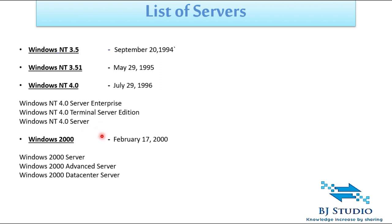The fourth edition is Windows 2000, released in February 2000. When it comes to Windows 2000, they listed three flavors or editions: Windows 2000 Server, Windows 2000 Advanced Server, and Windows 2000 Data Center.